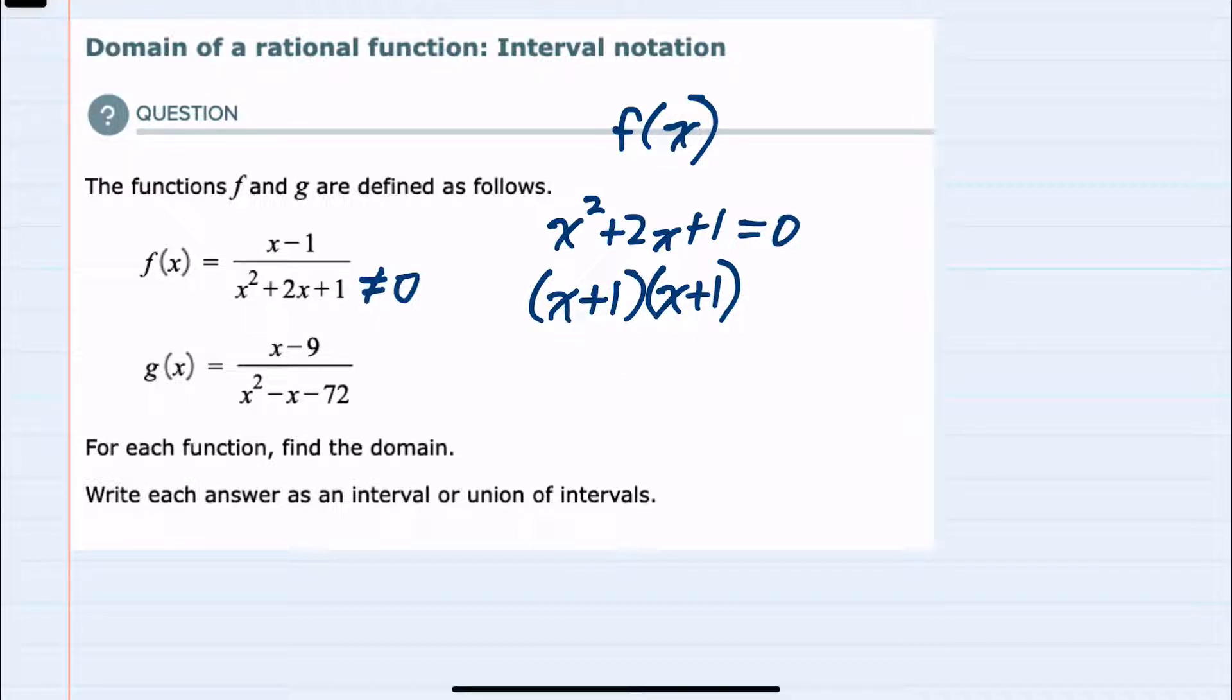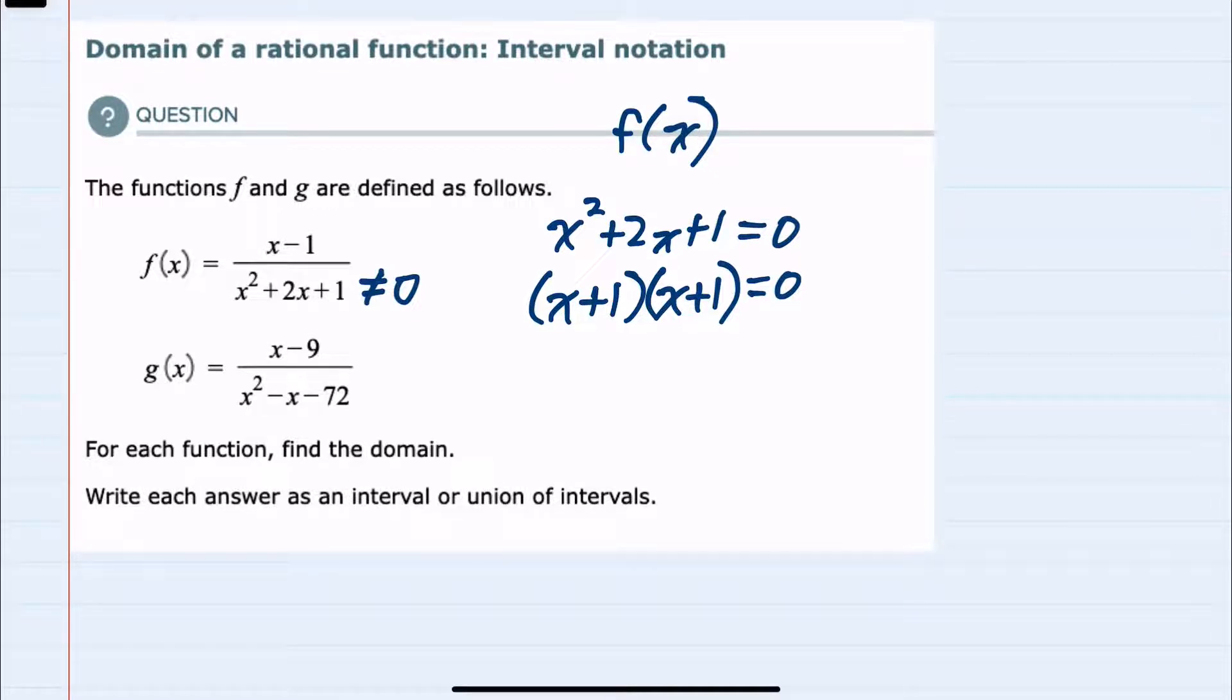Now that I factored the left hand side, when two factors are multiplied to be zero, one of those two would have to be zero. And since they're the same, I'll just set one, x plus 1 equal to zero. And I get x equals negative 1.